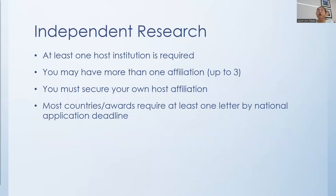If you're doing an independent research application, you need to have at least one host institution. You may have more than one affiliation — you can upload up to three letters to your online application. You must secure your own host affiliation. Most countries and awards require at least one letter by the national application deadline, though requirements vary by country. Some countries say a letter is required by the deadline; others say strongly recommended but not necessarily required. Read the country award profile on the national Fulbright website to see exactly what's needed.